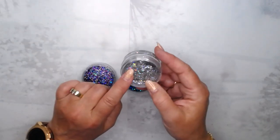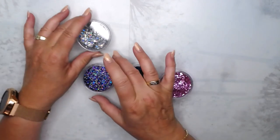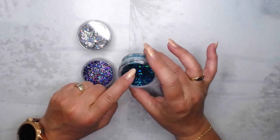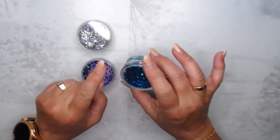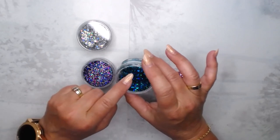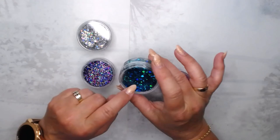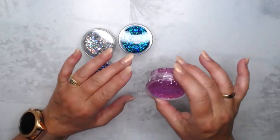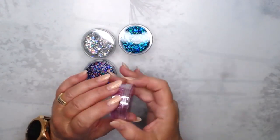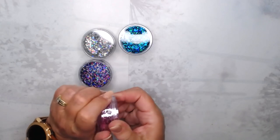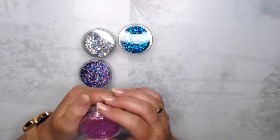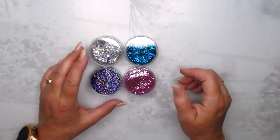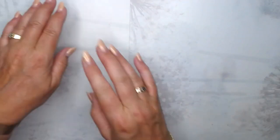The silver one has stars and moons in it. The purple one has stars. This one has hearts. And the pink one has, it's a really nice shimmer.